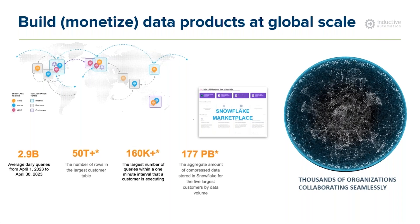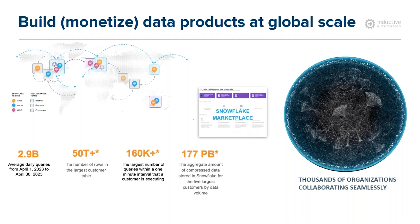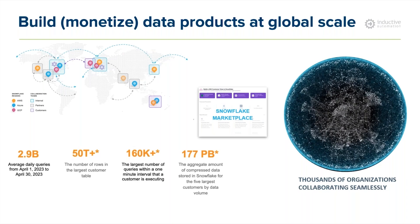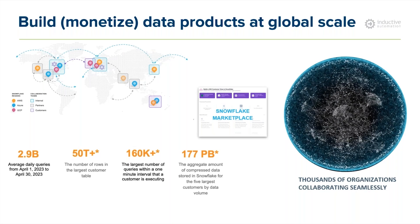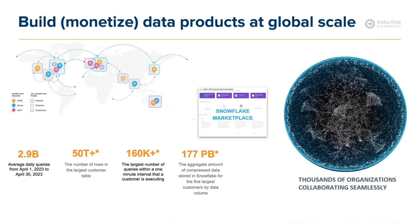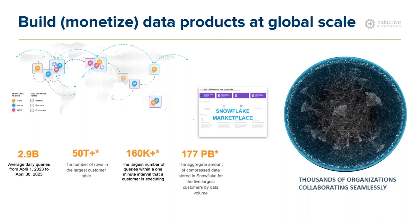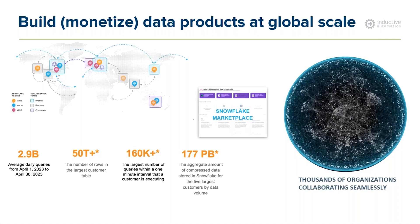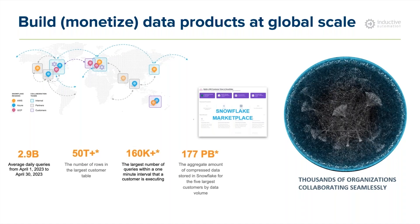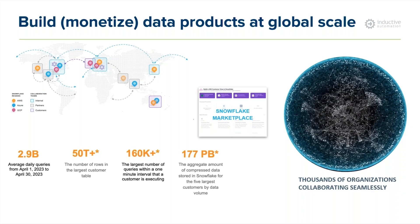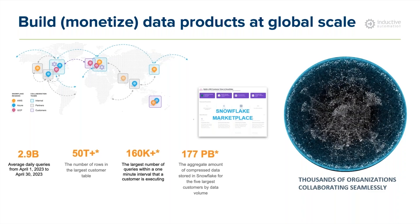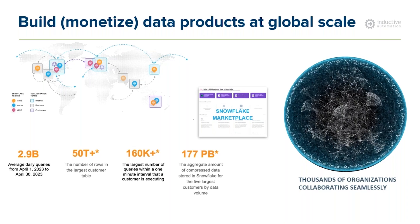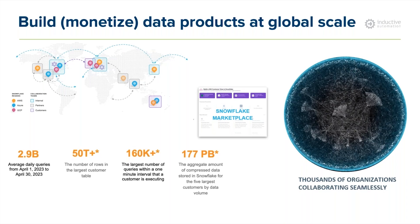Even with a single cloud vendor, data sharing between two regions is highly complicated — hundreds of services are involved. With Snowflake, it's one single service with SQL API for data sharing. On performance: this is one of the most performant databases ever invented. On a daily basis, 2.9 billion queries are executed. A single customer's data table holds 50 trillion rows. In a one-minute interval, around 160,000 queries are processed. For just five customers, 177 petabytes of data sit within Snowflake. This is the scale at which we handle big data, making large-volume OT and IT data convergence seamless.